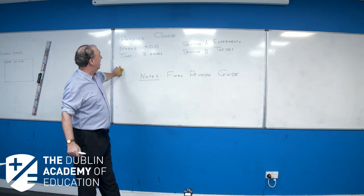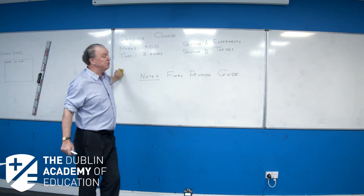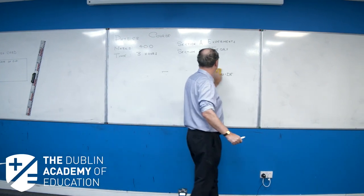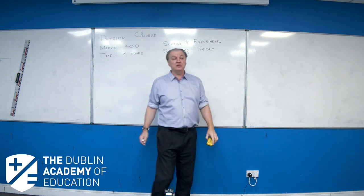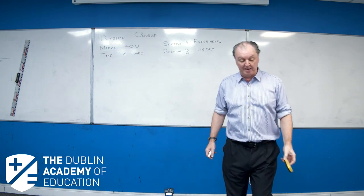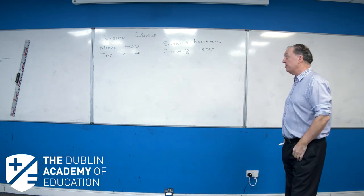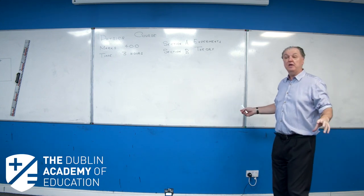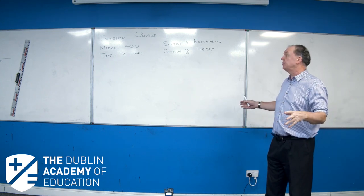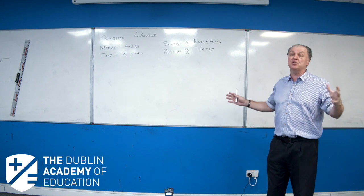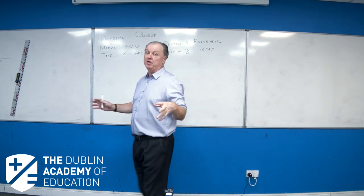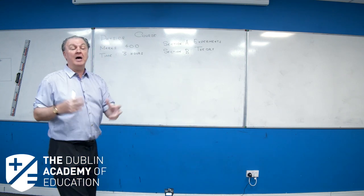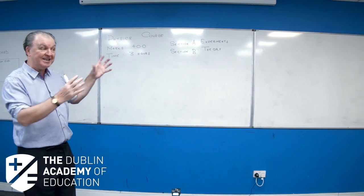Well, let's start. There's 400 marks altogether with your physics paper and three hours is the length of time you have to do the paper. Three hours, I think, is sufficient. I never really hear too much about students running out of time. So if you manage your time well, three hours is absolutely fine. But I will be talking about how long you should spend on each question as I go through this.